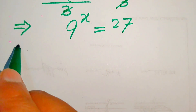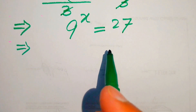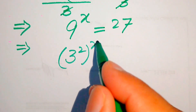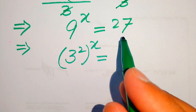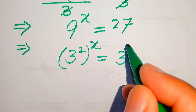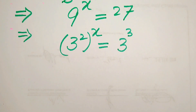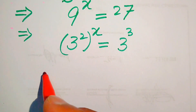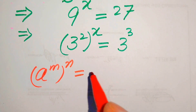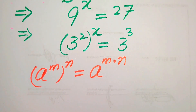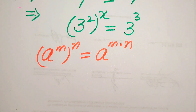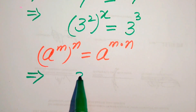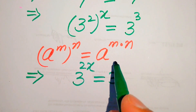Now we write the prime factors of both sides. The base 9 equals 3 squared, so the left side becomes 3 squared to the power of x. The right side, 27, equals 3 cubed. We apply the exponential law: a to the power of m to the power of n equals a to the power of m times n. Multiplying the exponents on the left gives us 3 to the power of 2x equals 3 to the power of 3.